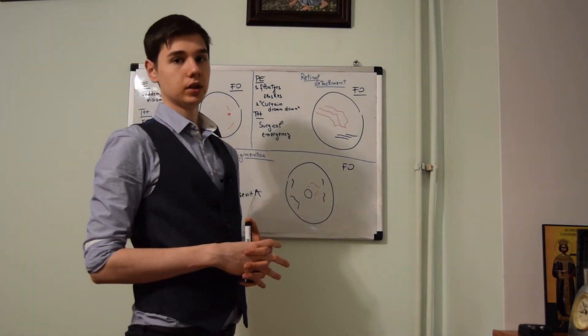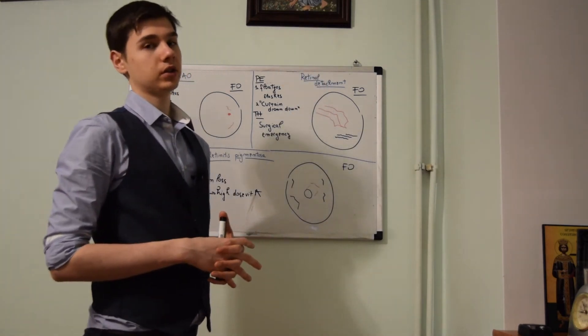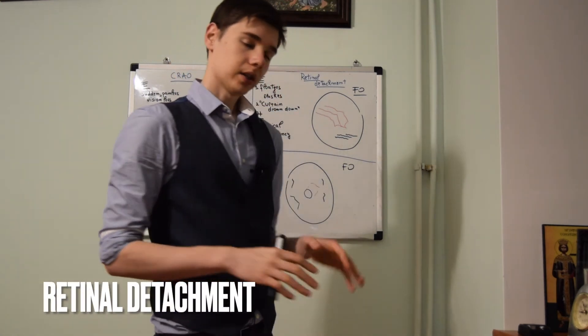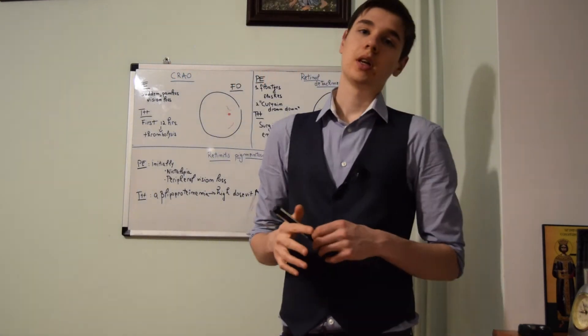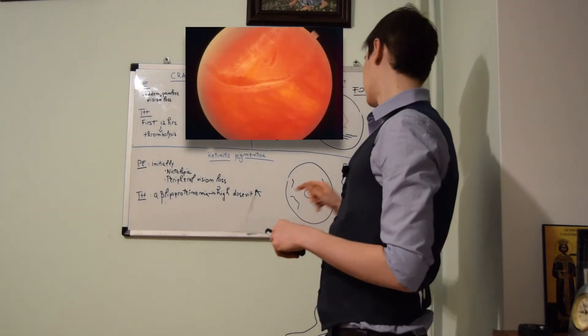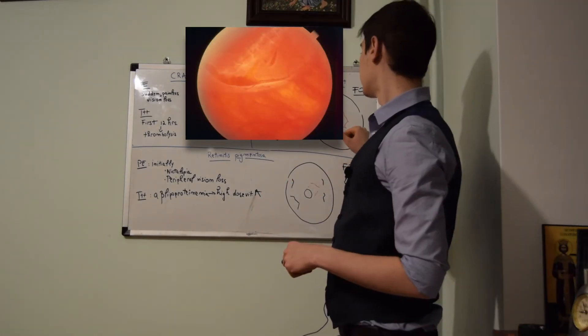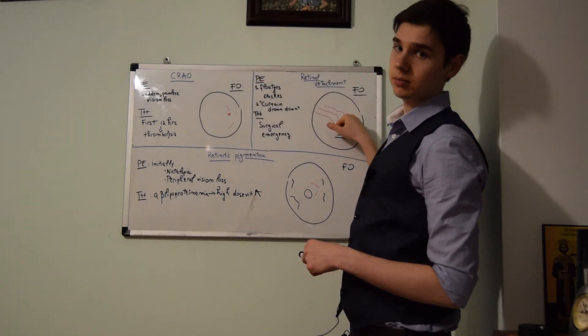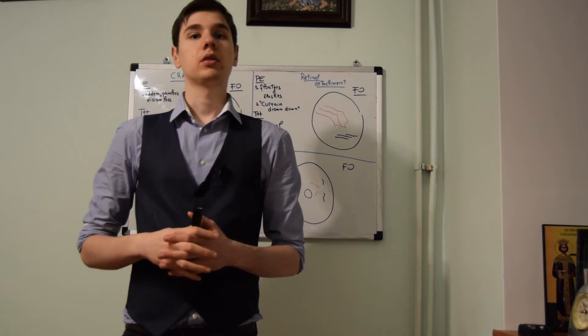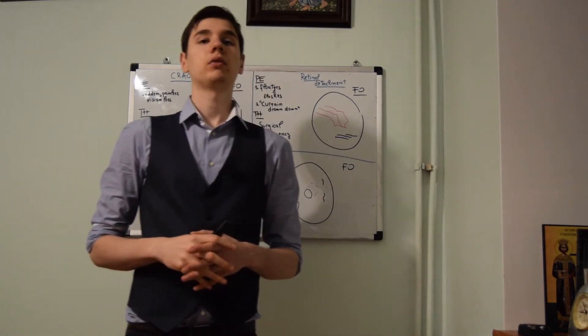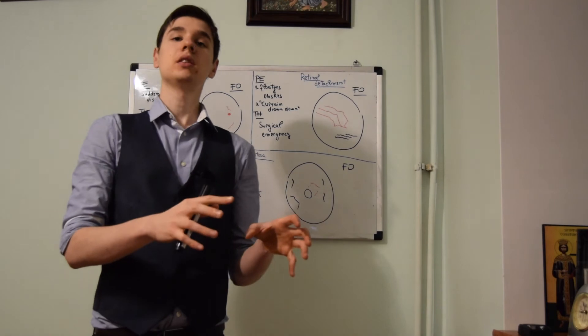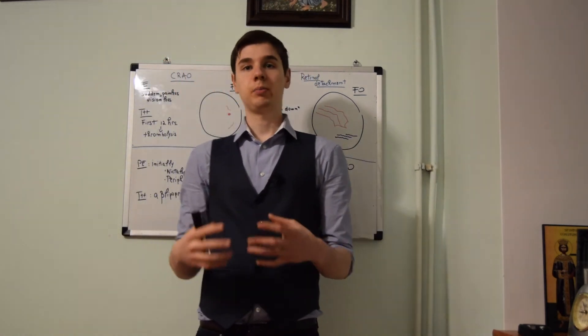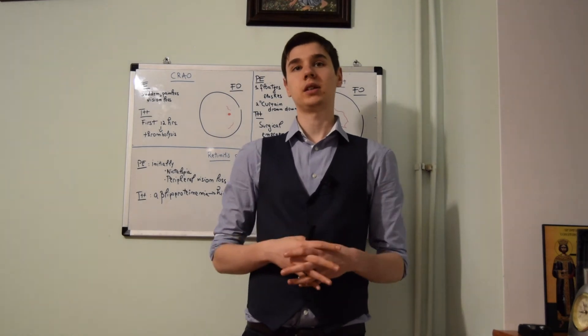Another condition seen on the fundoscopic exam is retinal detachment. The retinal detachment presents with crinkling of the retina and change in the trajectory of the retinal vessels. The patient's history revolves around floaters and flashes. These are the first signs that the patient had retinal detachment.